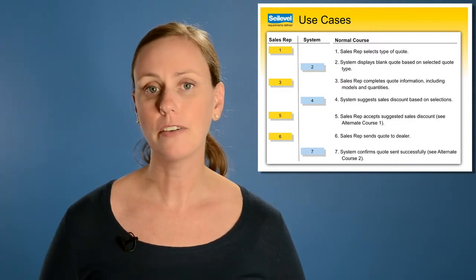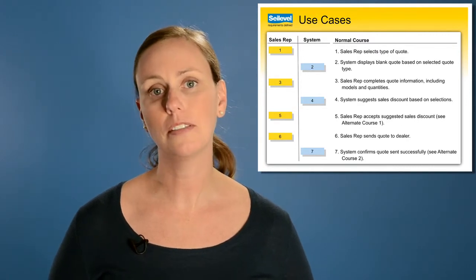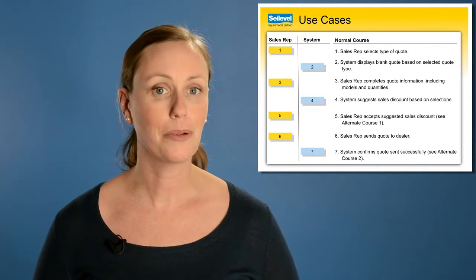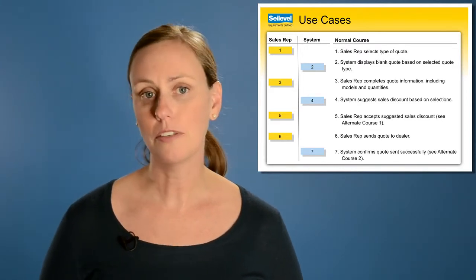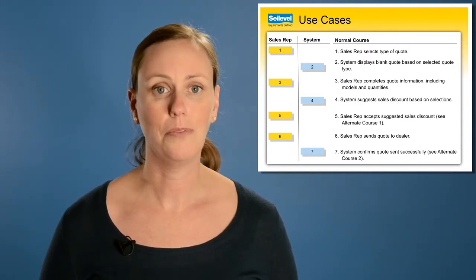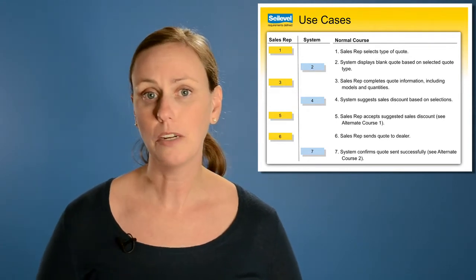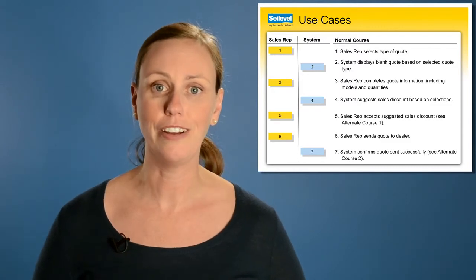Also in this example, we can see on step five how there is an alternate path referenced. In the main path, the sales rep accepts the suggested sales discount, but we also need to handle the path in which the sales rep does not want to accept that discount. The alternate path would explain the steps to follow. For example, maybe the sales rep can enter an overriding discount. We then need to capture the requirements for that alternate option, including what kind of control the sales rep has or what approval workflow needs to be followed in this scenario.